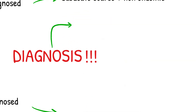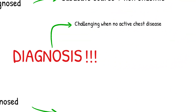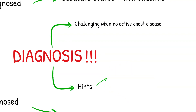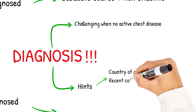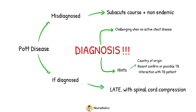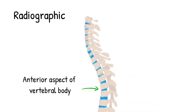The most difficult aspect of diagnosing skeletal tuberculosis is considering the diagnosis, particularly because there is no proof of active chest disease in the majority of cases. Clinical hints are normally derived from the patient's history, and may include concerns about the patient's country of origin as well as a history of recent confirmed or possible tuberculosis infection or interaction. Typically, radiographic anomalies are first seen in the anterior aspect of a vertebral body, with demineralization of the endplate and lack of definition of the bony rim. As a result, the opposite vertebra gets involved, and a paravertebral abscess can be seen in some cases.